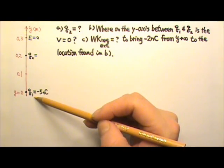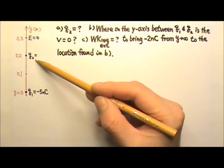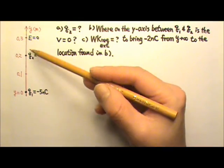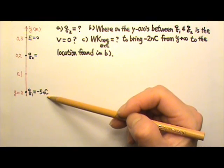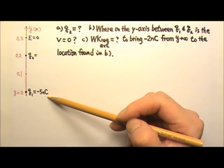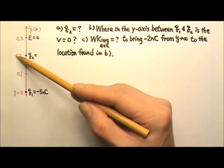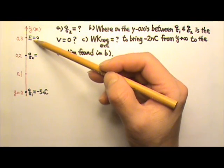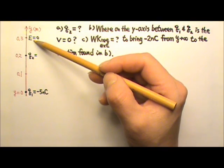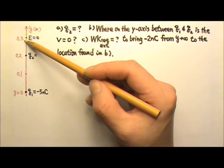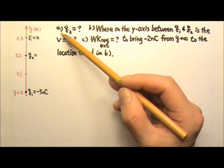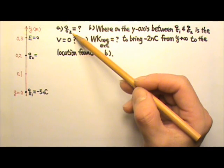Two point charges, Q1 and Q2, are placed on the y-axis. Q1 at the origin carries negative 5 nC of charge. Q2 is at y equals 0.2 meters. The net electric field is zero at y equals 0.3 meters. Part A: find Q2.